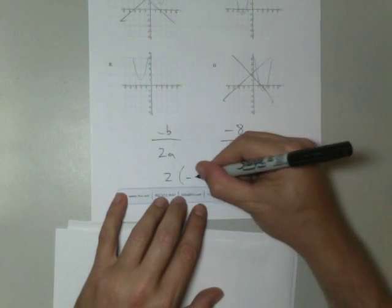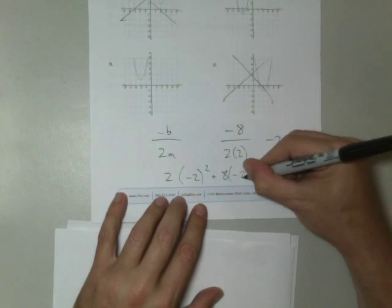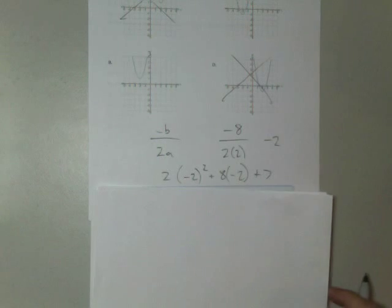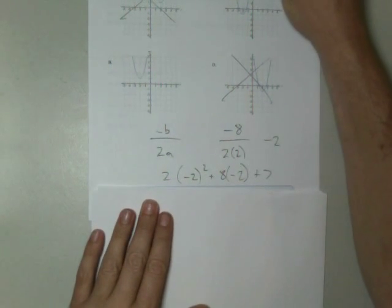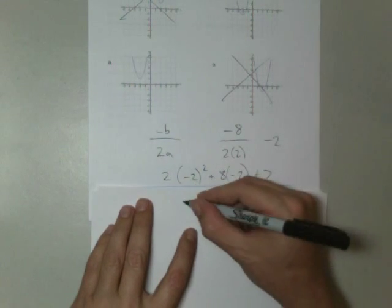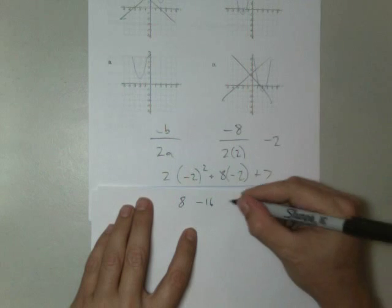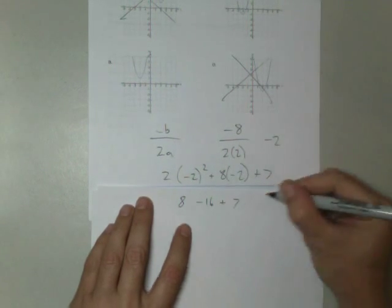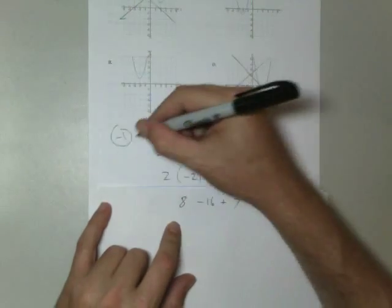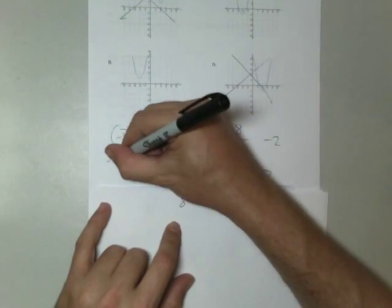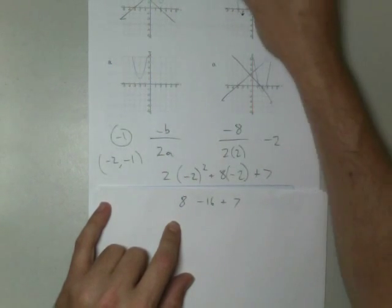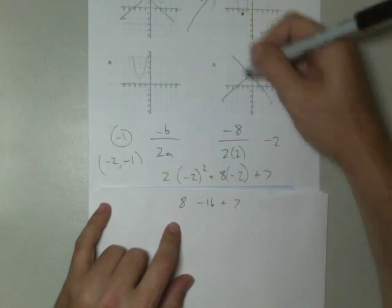So I'm going to plug in: 2(-2)² + 8(-2) + 7. What I'm doing is I'm plugging in the x value, -2, into this equation. And I'm going to see what my y value is. -2 squared is 4 times 2 is 8, minus 16 plus 7. 8 minus 16 is -8 plus 7 is -1. So the point (-2, -1) is on the graph. -2, -1. And there it is, C.